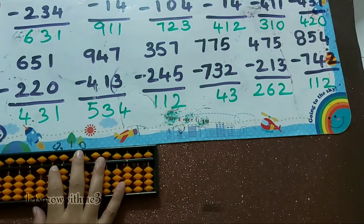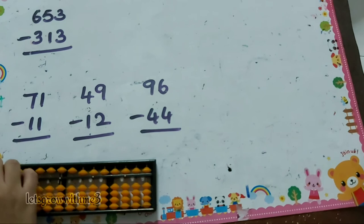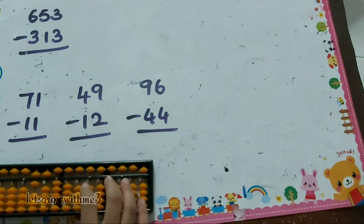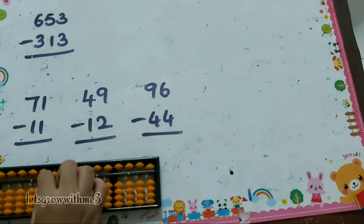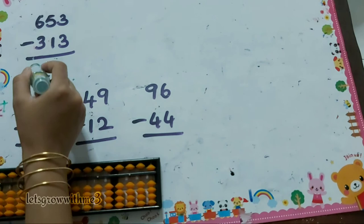Let's solve the problem. 653 minus 313: minus 3 — minus 5 plus 2. Minus 1 — minus 5 plus 4. Minus 3. So the answer is 340.